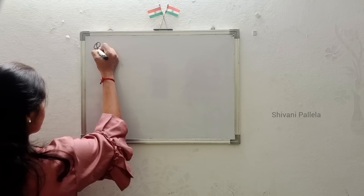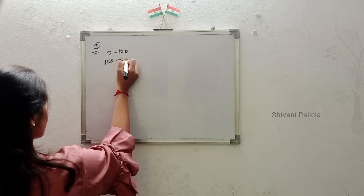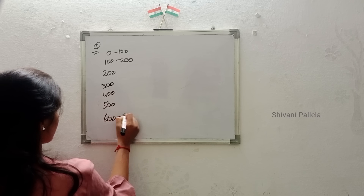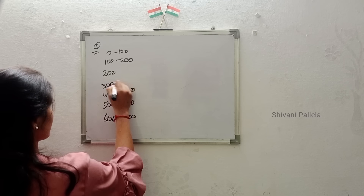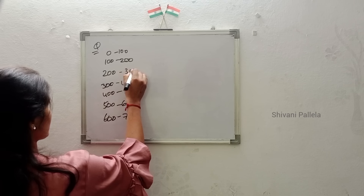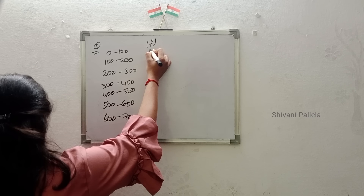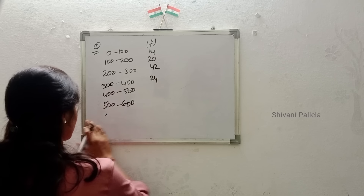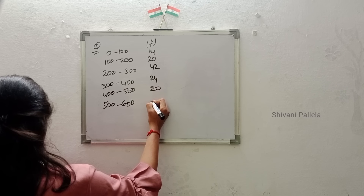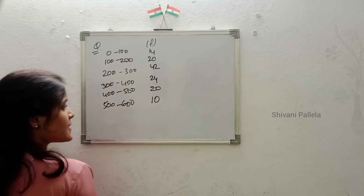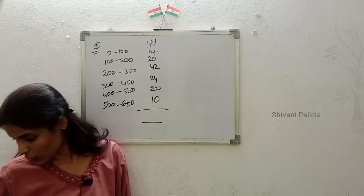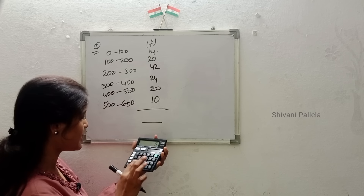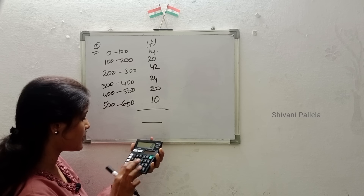For direct method, suppose in the question they give class intervals 0–100, 100–200, 200–300, 300–400, 400–500, 500–600, 600–700, and in the f column they have given frequencies 14, 20, 42, 24, 20, and 10. They have said 'calculate arithmetic mean using direct method.' n equals total frequency: 14 plus 20 plus 42 plus 24 plus 20 plus 10 equals 130.